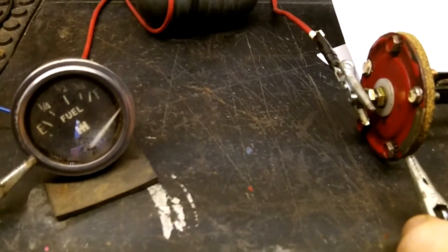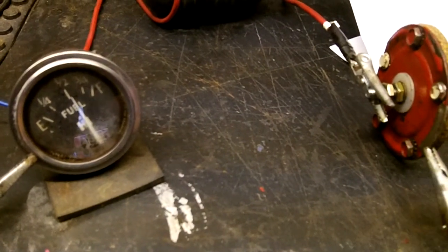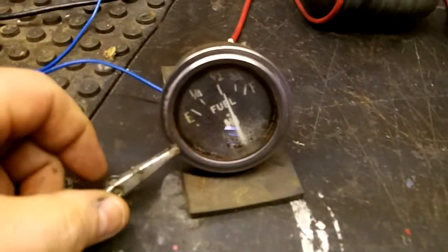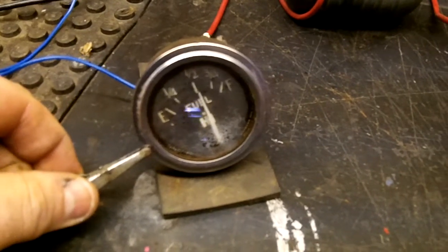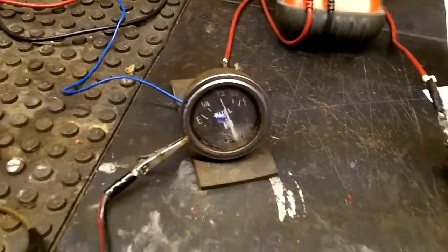So if your gauge is reading full all the time, I'd start with the ground on the sending unit. And if it's reading empty all the time, just check the ground on the gauge. That's the simplest place to start.